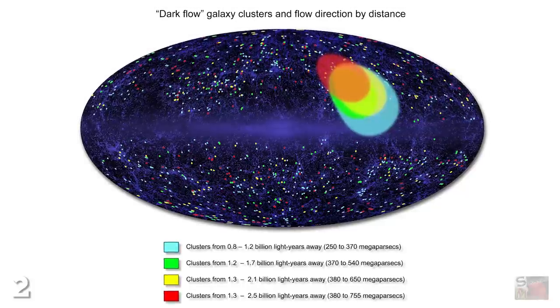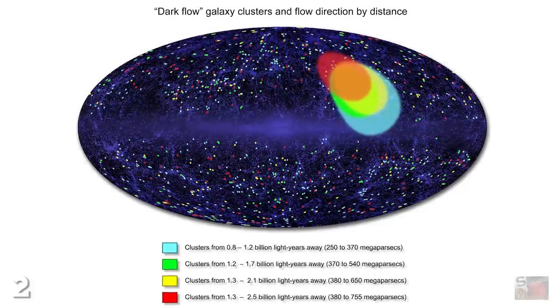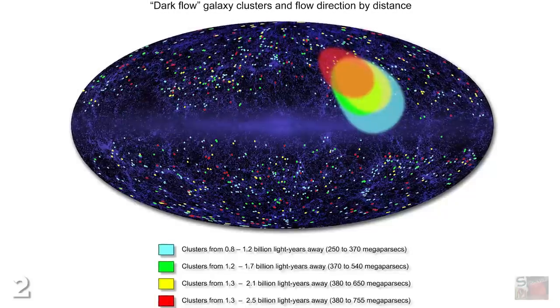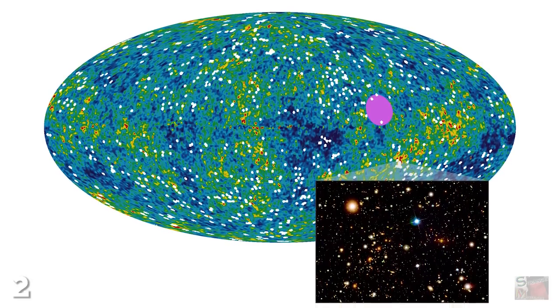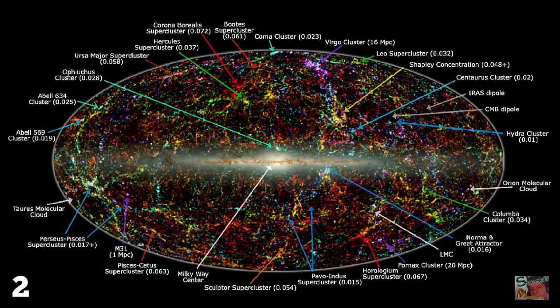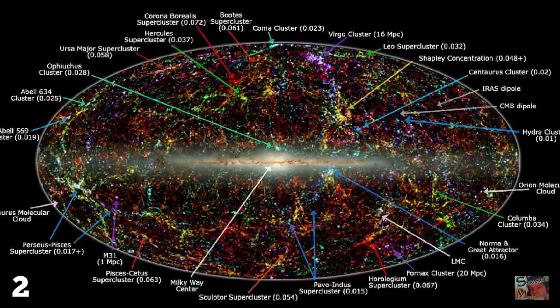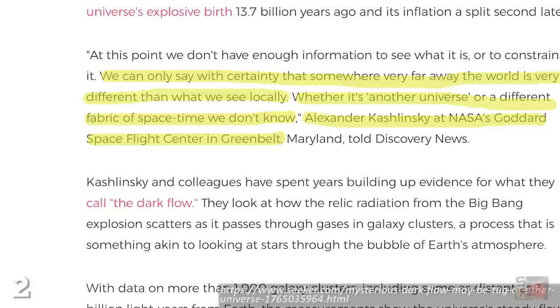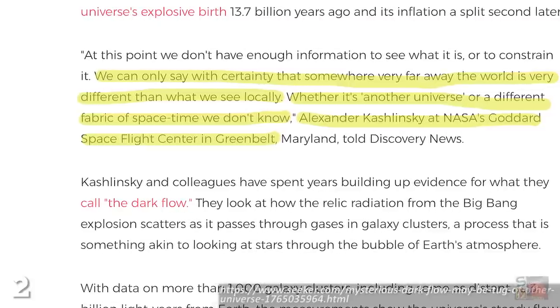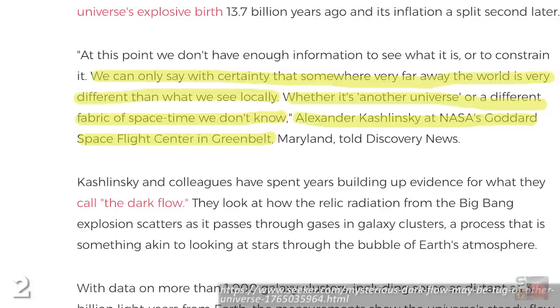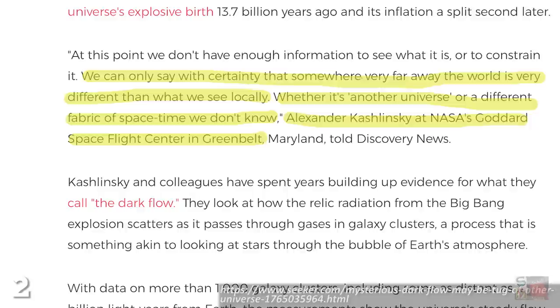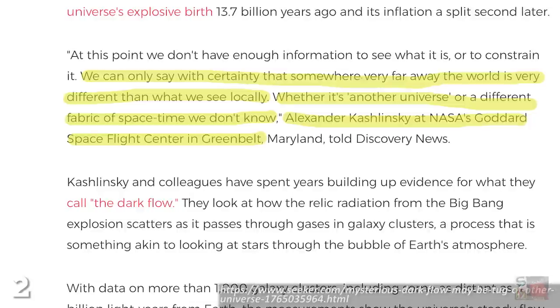Scientists call this force Dark Flow, and the colored spots on this image show just how much of our universe is affected by this mysterious phenomenon. Some astronomers believe that whatever this force is, it may have been created a fraction of a second after the Big Bang. On this subject, NASA researcher Alexander Kozlinski was quoted as saying, we can only say with certainty that somewhere very far away, the world is very different from what we see locally. Whether it is another universe, or a different fabric of space-time, we don't know.